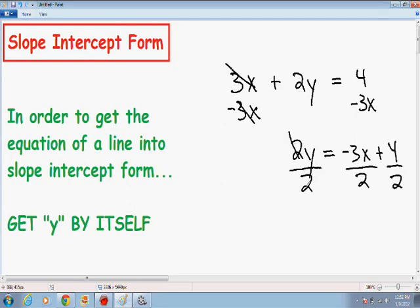So now on the left hand side the 2's cancel out, and we do have y by itself. And on the right hand side we have negative 3x over 2, which can just be written as negative 3/2 x plus 4 divided by 2, which is just 2.